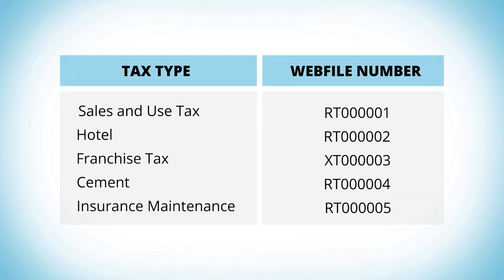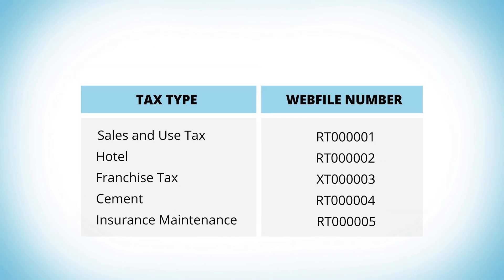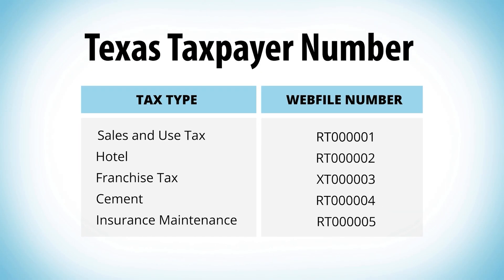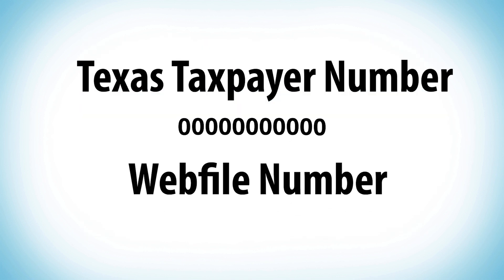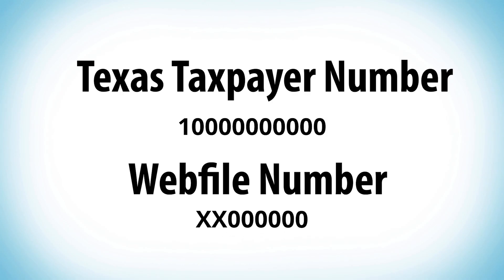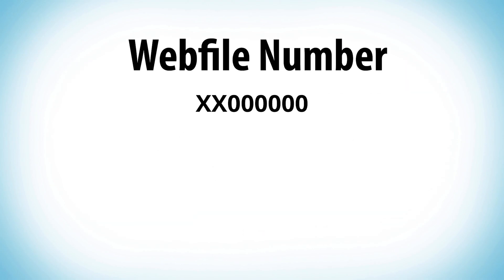Web file numbers are different for every tax type per Texas taxpayer number. Both the Texas taxpayer number and the corresponding unique web file number are printed on returns and notices mailed by our office to the address on file. Texas taxpayer numbers are 11 digits and begin with either a 3 or 1. Web file numbers contain eight characters and begin with two letters followed by six digits.